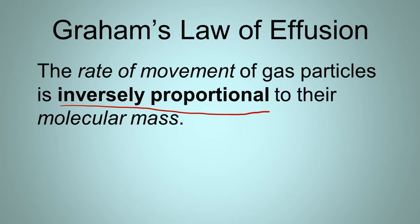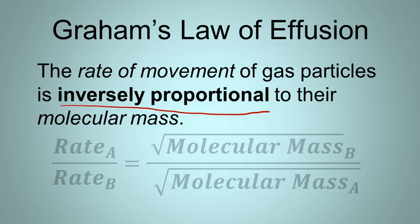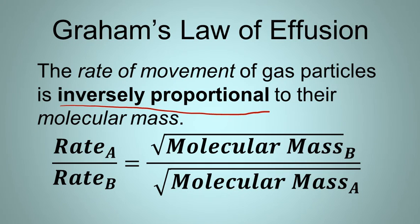Now, the way that we express this in an equation looks like this. The rate of gas A over the rate of gas B equals the square root of the molecular mass of gas B over the square root of the molecular mass of gas A. Now this looks kind of complicated. It's really not as complicated as it looks. I want you to notice a couple things though. We have A is in the numerator on the left side, but it's in the denominator on the right side. And the same thing for B. They're basically kind of flip-flopped across from each other.